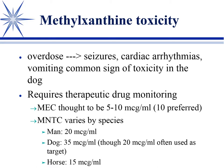Arrhythmias start out as atrial/supraventricular arrhythmias but can progress into ventricular arrhythmias. Most animals that die of a methylxanthine overdose - like chocolate toxicity - die from ventricular arrhythmias. In veterinary medicine it depends on what type of chocolate as to how much theobromine is present. Milk chocolate has relatively little - they'd probably get pancreatitis before theobromine toxicity. But baker's chocolate and dark chocolate are more problematic. In dogs, vomiting is a common sign of ingesting enough to cause toxicity.